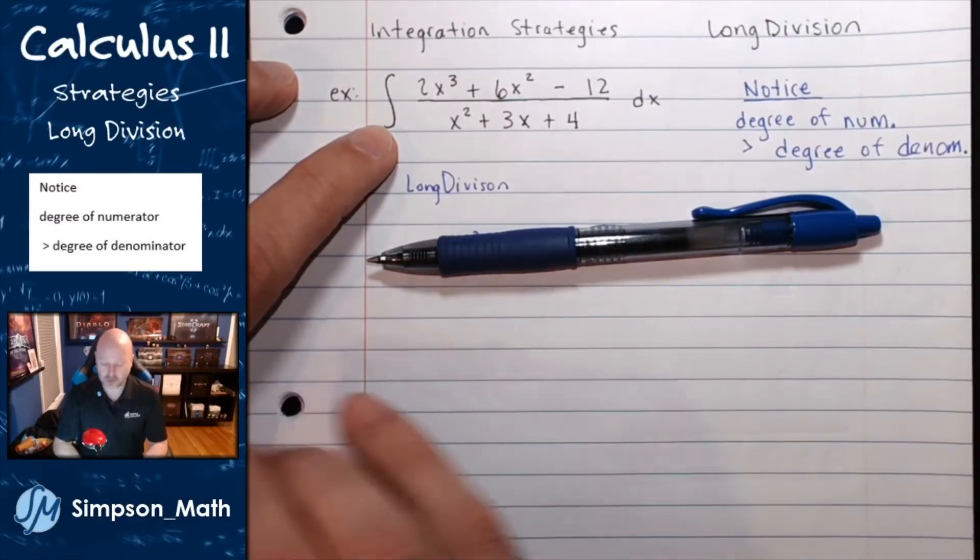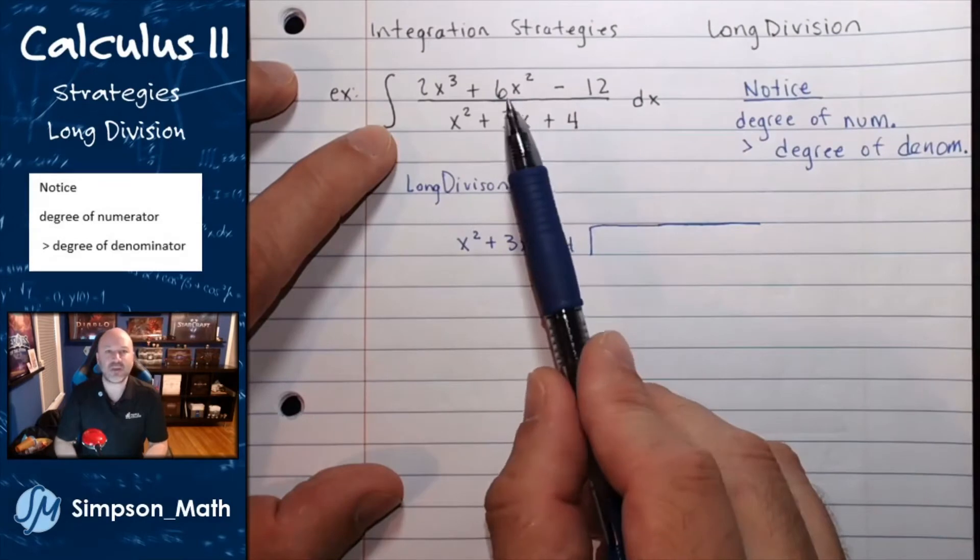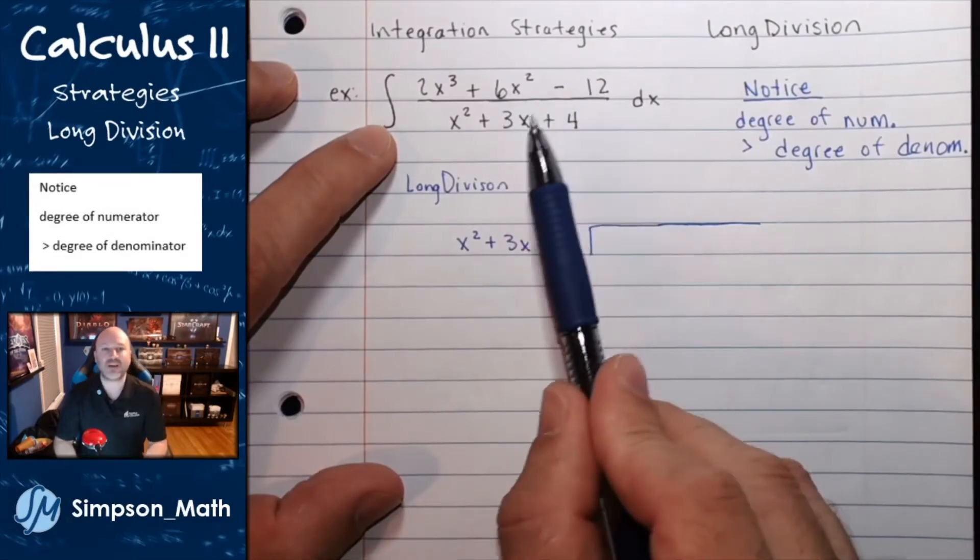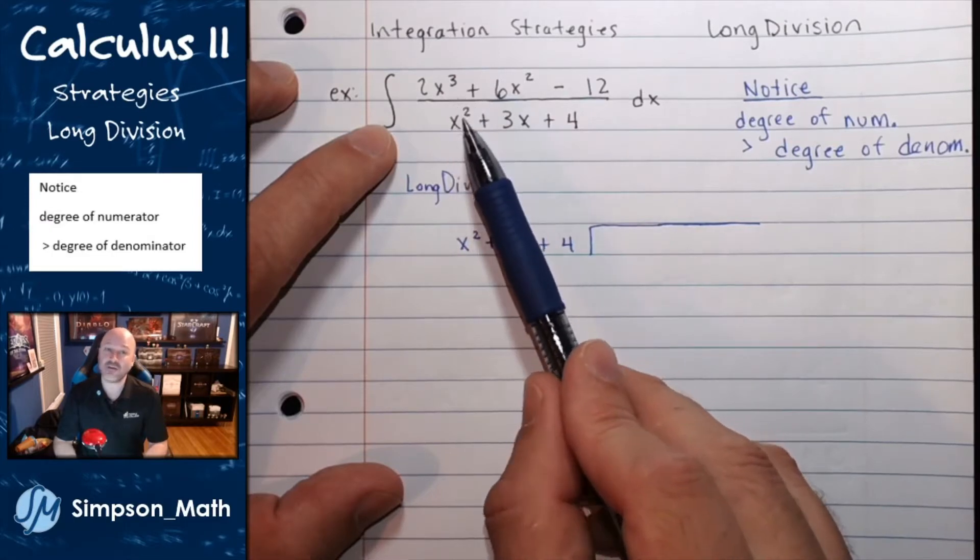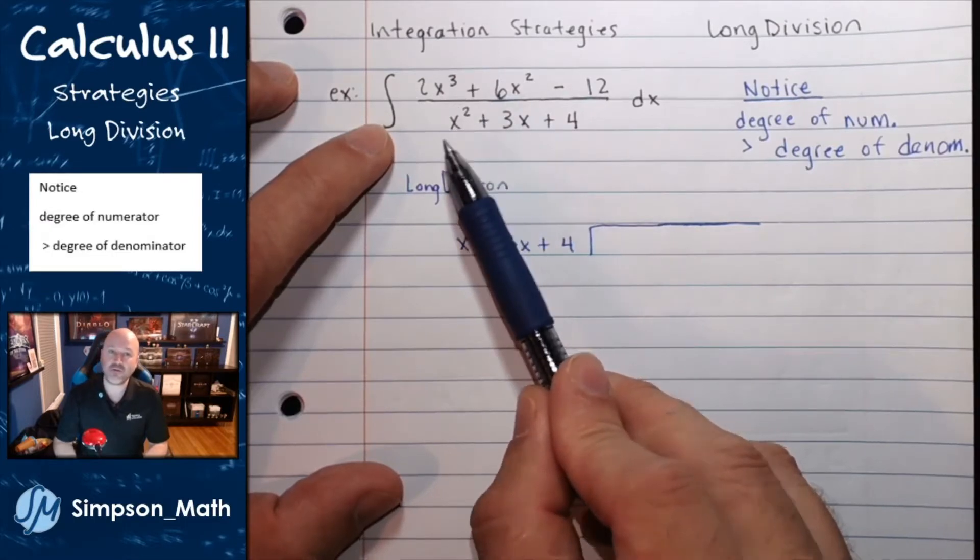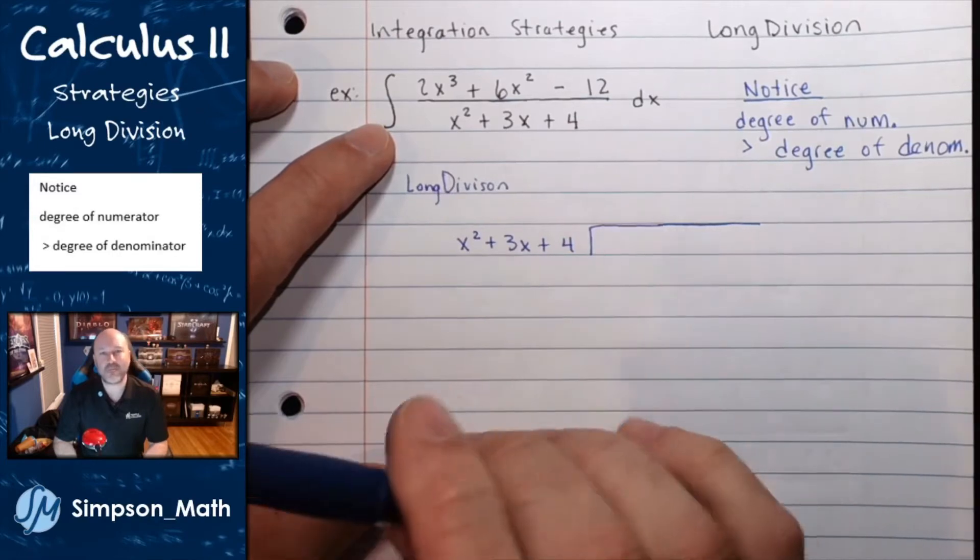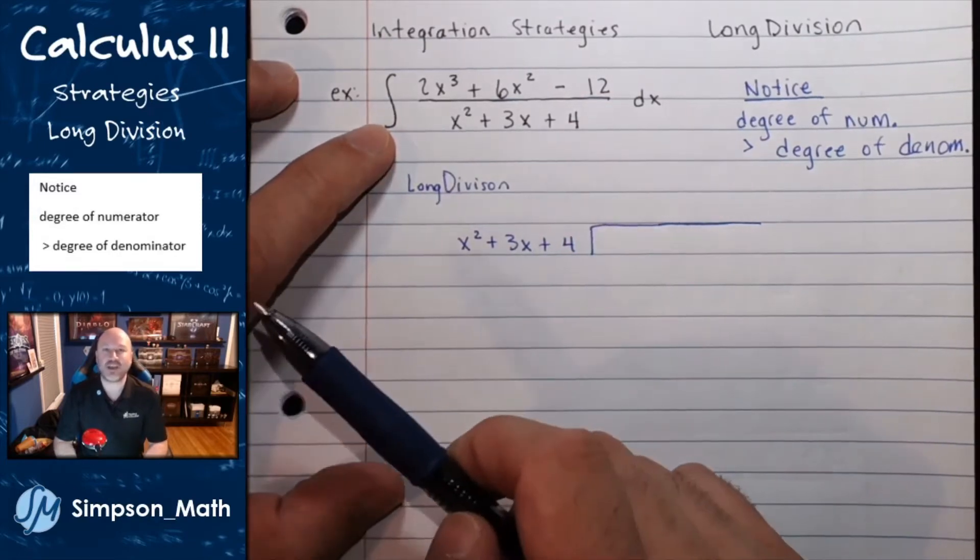one thing to look for is when given a polynomial divided by a polynomial, a rational function, if the degree of the numerator is higher than the degree of the denominator, long division may work out. It's a good time to try it, at least.